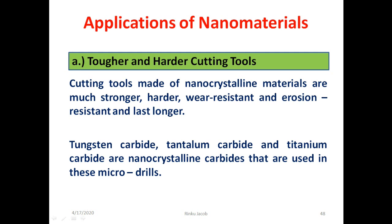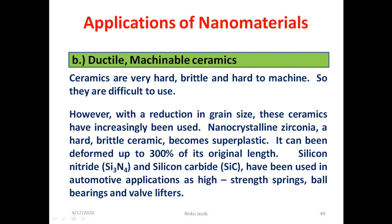Applications of nanomaterials include making tougher and harder cutting tools. Nano-crystalline materials are much stronger, harder, wear-resistant, and erosion-resistant. Tungsten carbide, tantalum carbide, and titanium carbide are nano-crystalline carbides used in micro-drills. Ceramics, which are hard and brittle, become more usable with reduction in grain size. Nanocrystalline zirconia becomes superplastic and can be deformed up to 300% of its original length. Silicon nitride and silicon carbide have been used in automotive applications as high-strength springs, board bearings, and valve lifters.